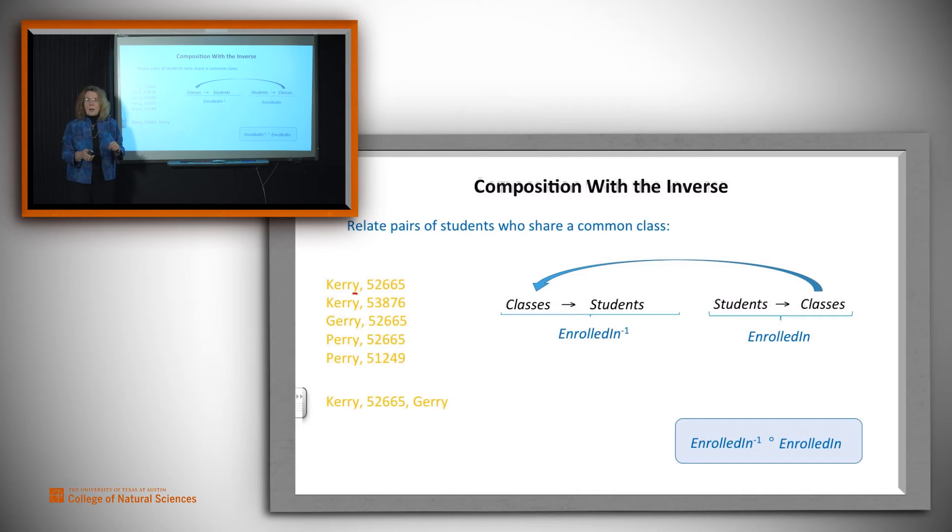Let's look at what elements we get out of this composed relation. So Cary is related to 52665. The inverse is going to take 52665 back to Cary, and it's also going to take 52665 to Jerry and to Perry.